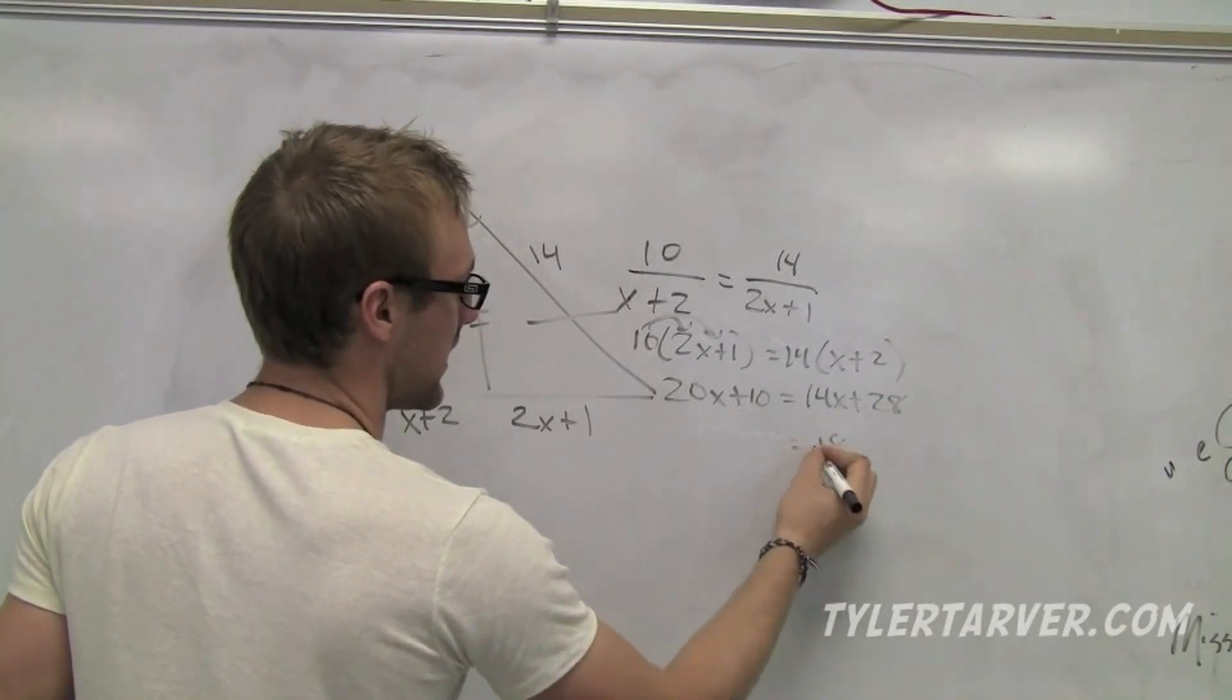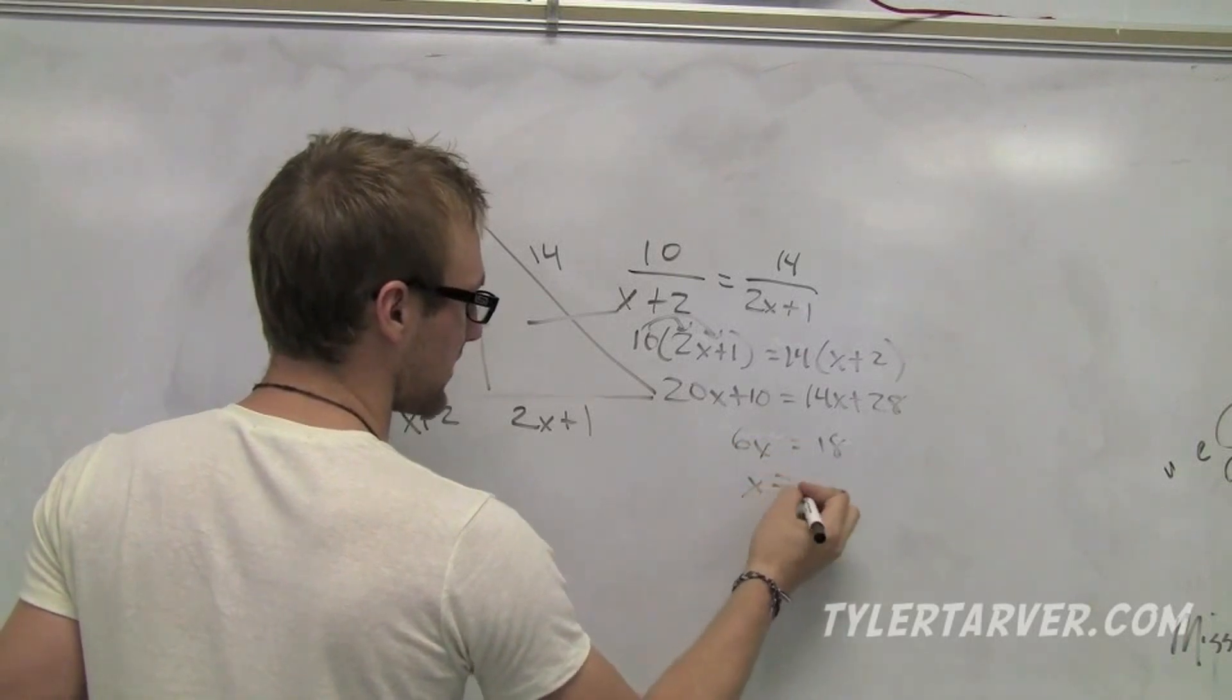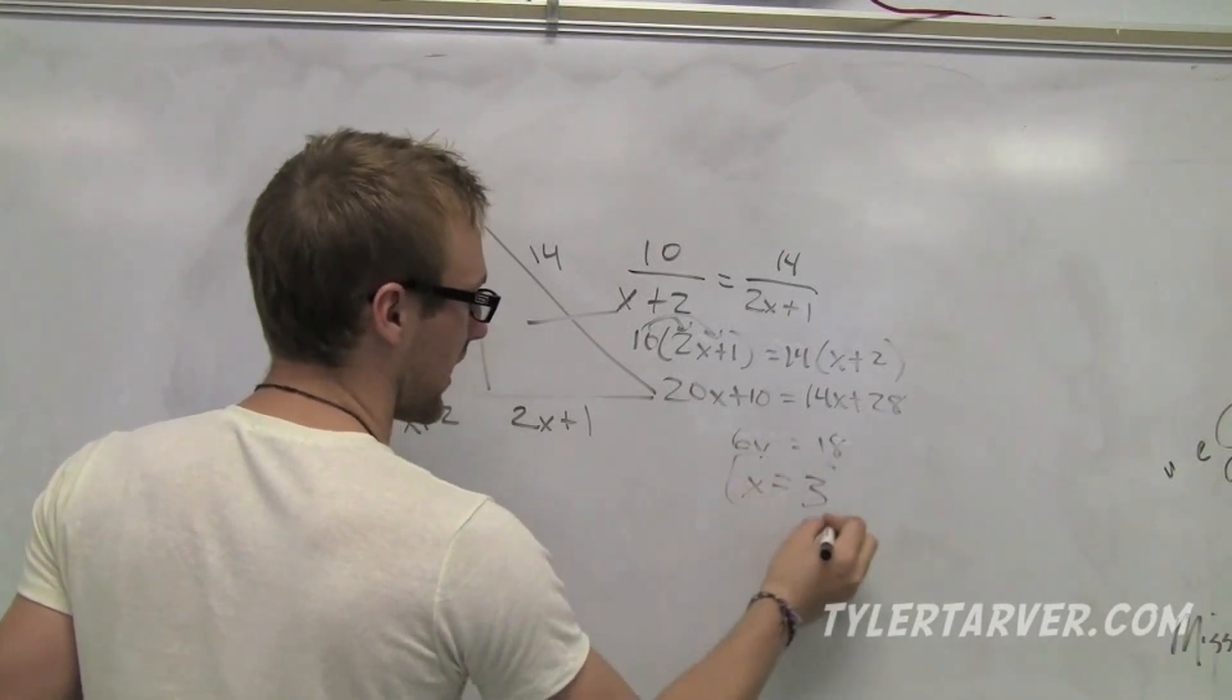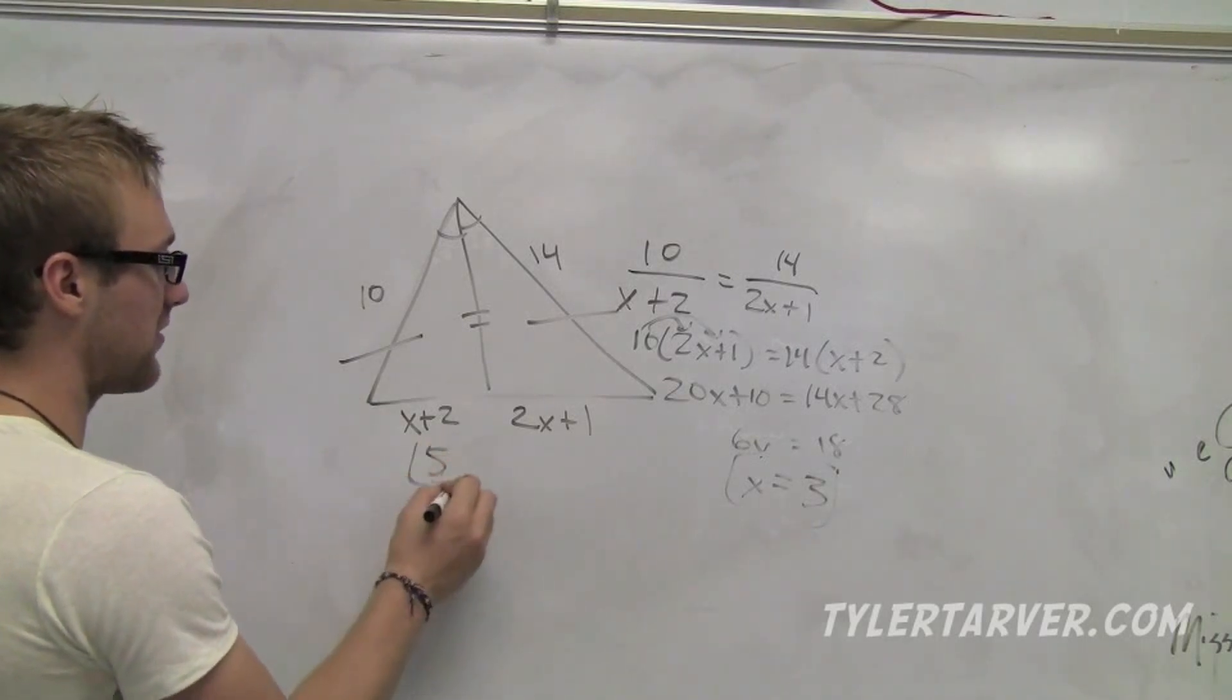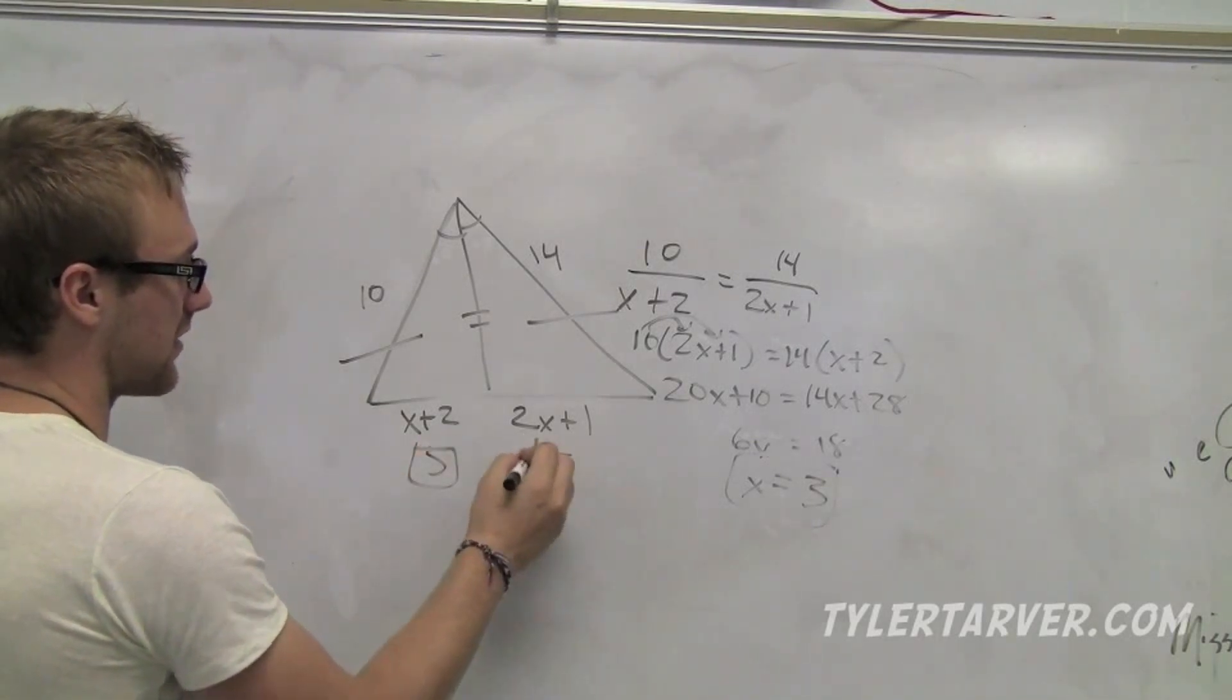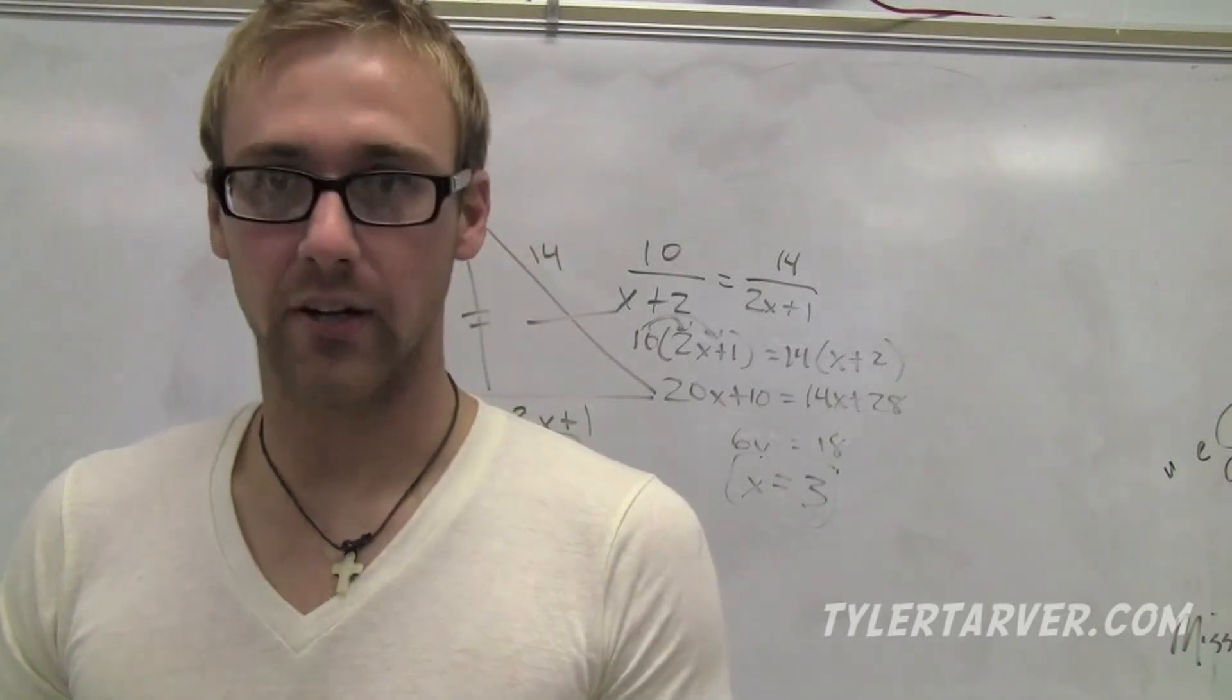Subtract 10 over there, that's 18. Subtract 14 over here, that's 6x. And the perfectness of how this is working out, I would assume that I did it correct. x equals 3. So I can plug in x here, I know that's 5. Plug in x here, that's 7. Goodness gracious, that's some good math right there. Tastes delicious, we're done.